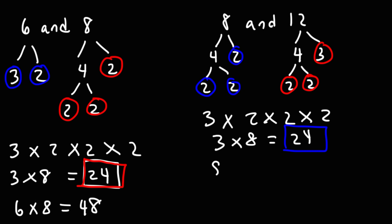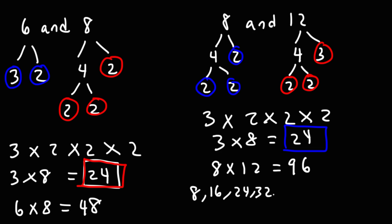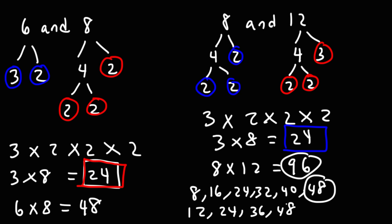Now, if we were to multiply 8 and 12, that will give us 96. 96 is a common multiple of 8 and 12, but it's not the least common multiple. If we write out the multiples of 8, we'll get 8, 16, 24, 32, 40, 48, and so forth. If we write out the multiples of 12, it will be 12, 24, 36, 48. So 96 is a common multiple of 8 and 12, 48 is a common multiple of 8 and 12, and 24 is a common multiple of 8 and 12.